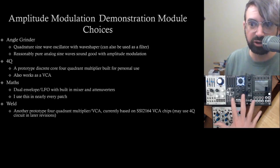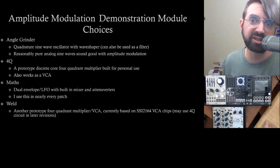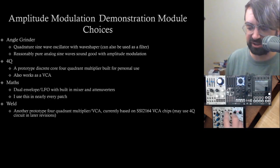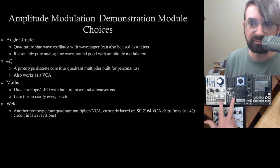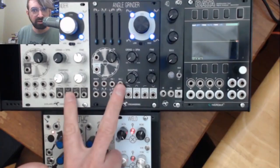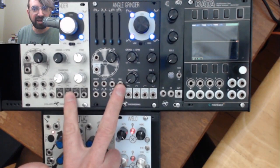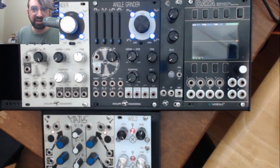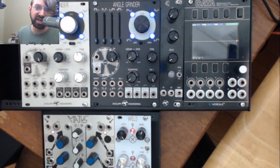Quick rundown of the modules I chose to use to demonstrate amplitude modulation. Two angle grinders as the oscillators. The angle grinder is a quadrature sine wave oscillator, all analog with wave shaping capabilities.